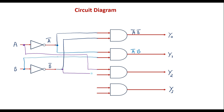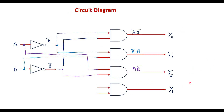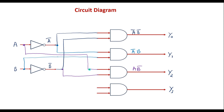Connect B-bar to the third AND gate to implement Y2 equals A B-bar. For Y3 equals AB: take the A signal and take the B signal and connect both to the fourth AND gate; the output is AB. This is the complete circuit diagram for the 2-to-4 decoder.